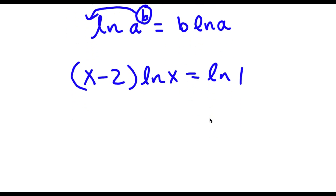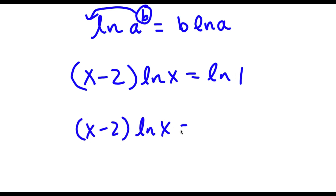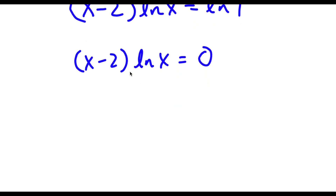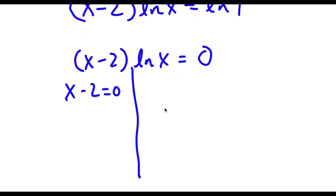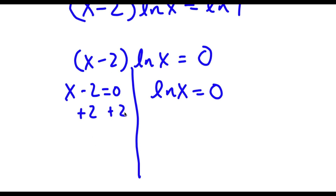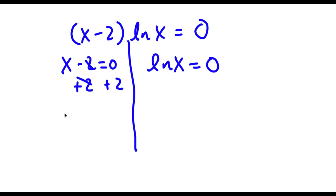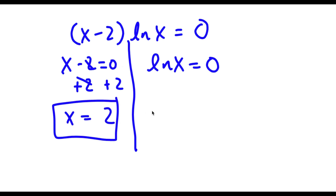Now ln 1 is actually equal to 0. So now I have x minus 2 times ln x is equal to 0, which gives me two equations: x minus 2 equals 0, and ln x equals 0. For x minus 2 equals 0, I simply add 2 on both sides and get x equals 2. So this is one solution.